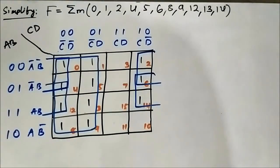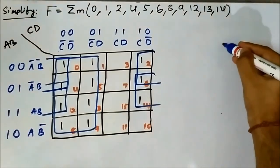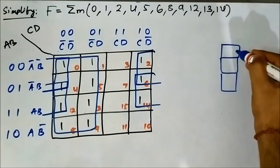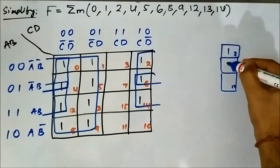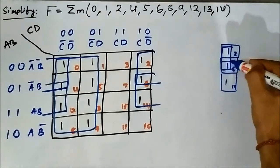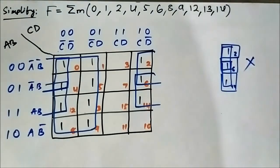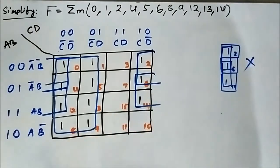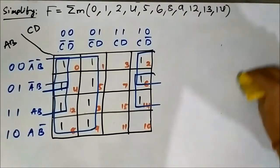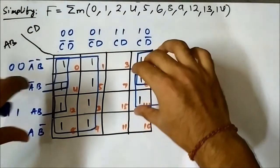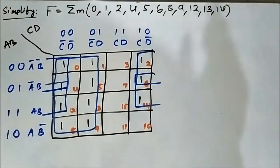Now here, what students do is after forming this octate, they form two pairs with the remaining cells 2, 6, and 14 — but that is wrong. Always give priority to a higher population group. Here there is a possibility of forming quads. So don't form two pairs — form quads instead. Always give priority to the higher cell group.